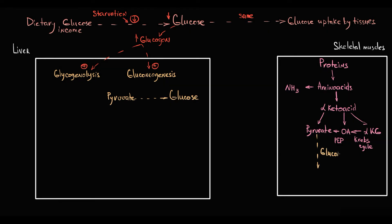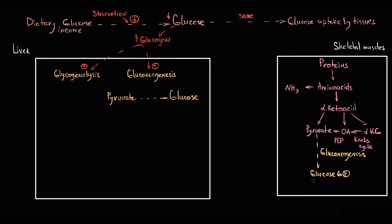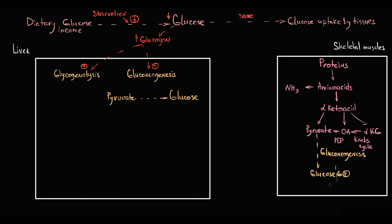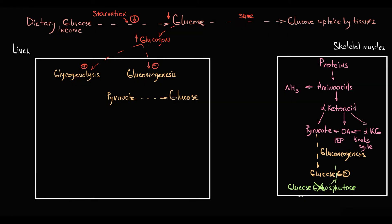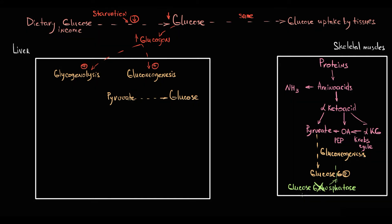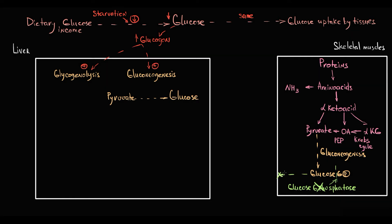Gluconeogenesis results in formation of glucose-6-phosphate, and glucose with a phosphate group cannot leave the cell. The only enzyme that can cleave this phosphate group is glucose-6-phosphatase. The problem is that muscle tissue does not have glucose-6-phosphatase, so even if a muscle cell produces glucose-6-phosphate from pyruvate, it simply cannot be released into circulation. Only two tissues have this enzyme: liver tissue and kidney tissue.